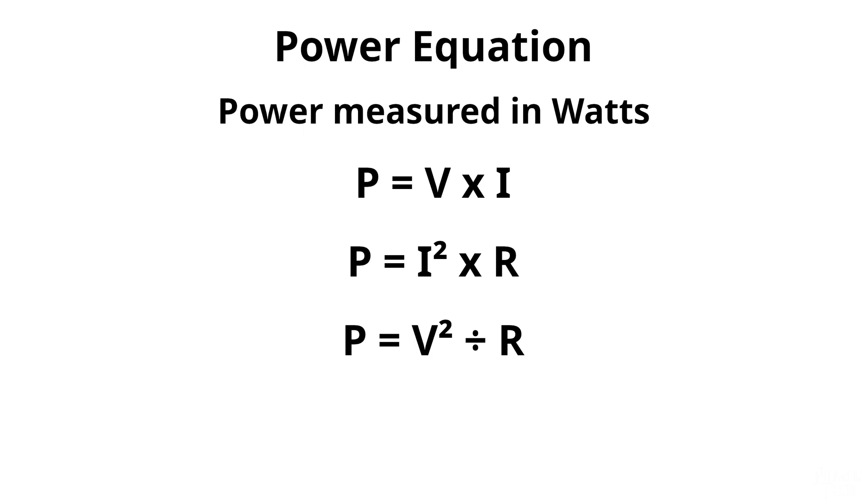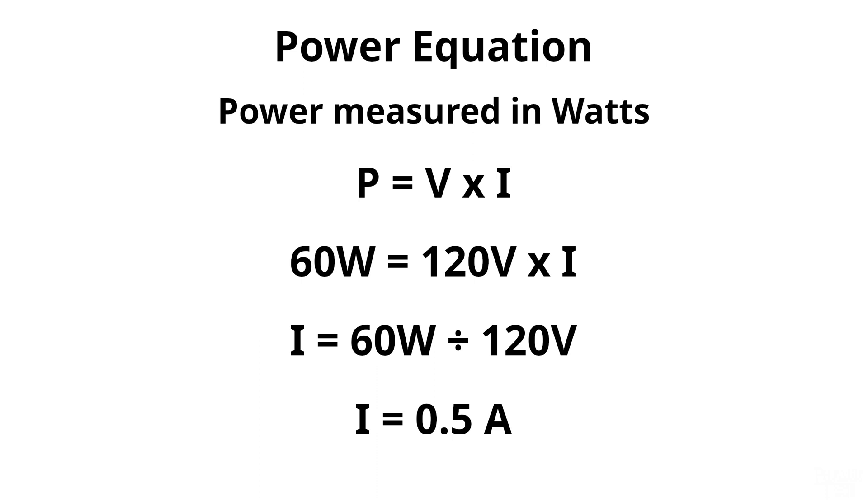Let's just do a simple example right now using a light bulb. If we know our light bulb is a 60 watt bulb and we connect it to a standard 120 volt outlet, how much current does the light bulb draw? Well, all we need to do is plug in the values we know and we can solve for the current, which comes out to half an amp.